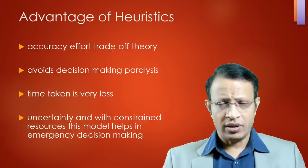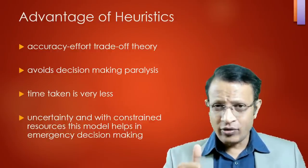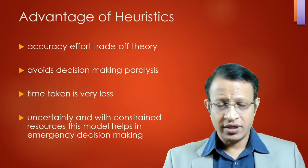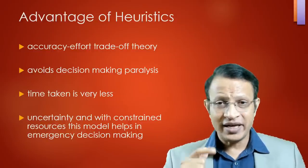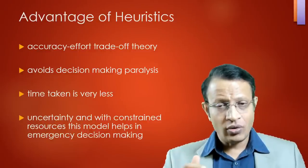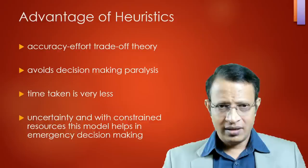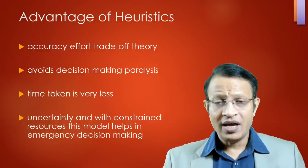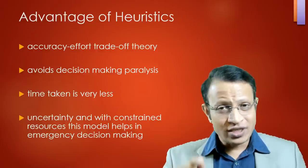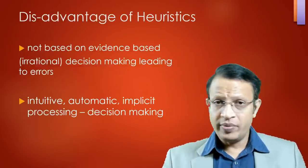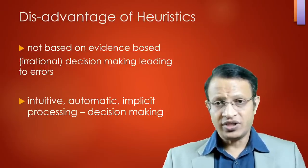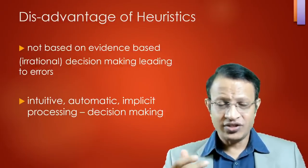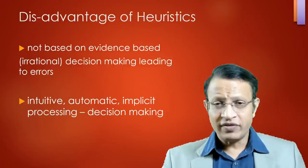The advantages of the heuristic model: it is a trade-off between accuracy and effort — effort must be applied immediately without waiting for ideal conditions. It helps avoid decision-making paralysis by taking decisions based on the available scenario, with very little time taken. Under uncertainty and constrained resources, this model helps in emergency decision-making. The decision may not be 100% right, but it is right for the situation. The heuristic model is intuitive, automatic, and implicit decision-making — more of a gut feeling based on a few parameters.